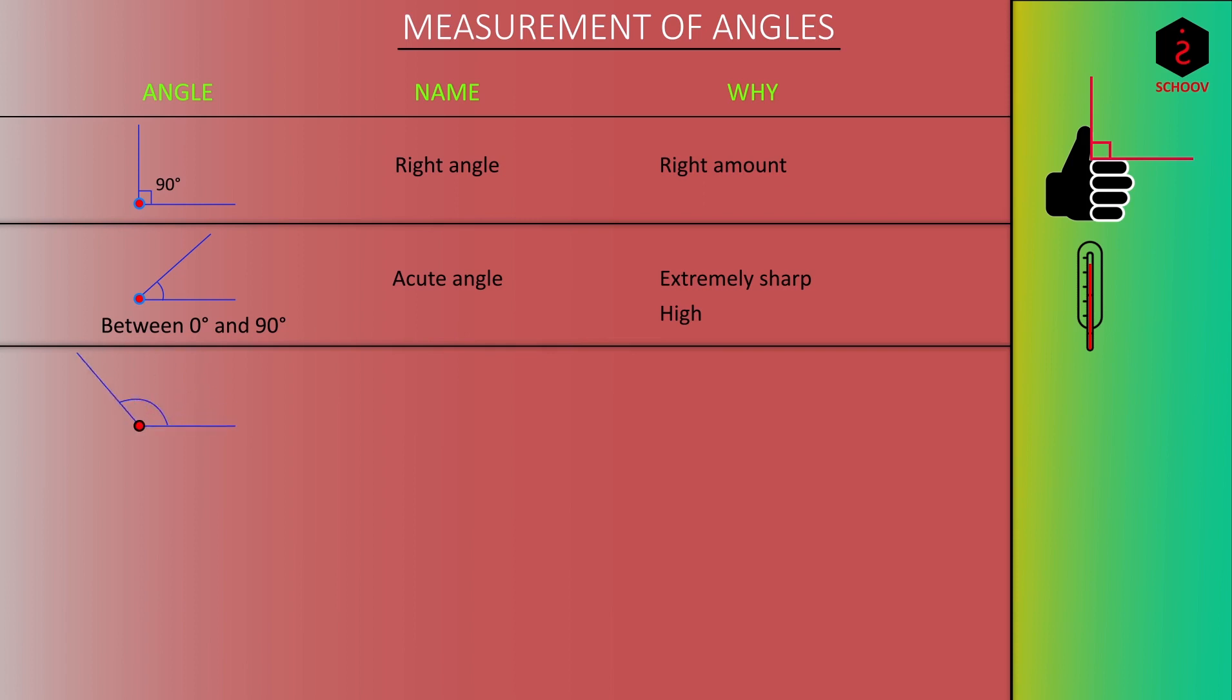Angles between 90 degree and 180 degree are called obtuse angles. Why? Because they are not as sharp as acute angles. And that is what obtuse means. Less sharp or low. As in a low fever when we have a low thermometer reading.